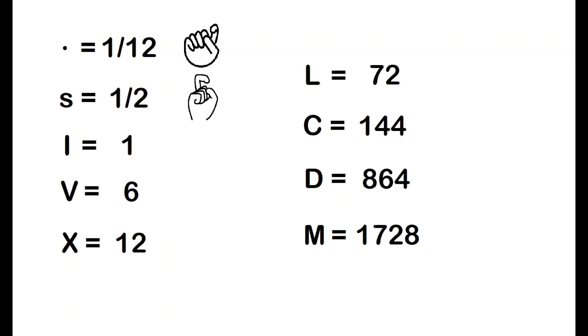I is simply a single finger, giving us the numbers 1 to 5 or 1 to 4 if you only have 5 digits on your hand. V is 6 or 5. The letter V is used as a representation of the hand with an opposing thumb.